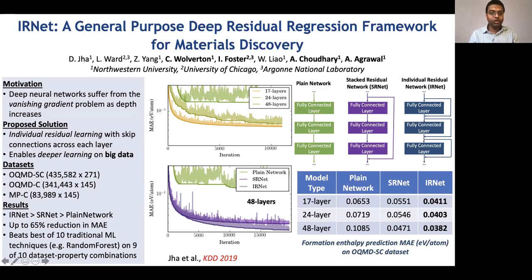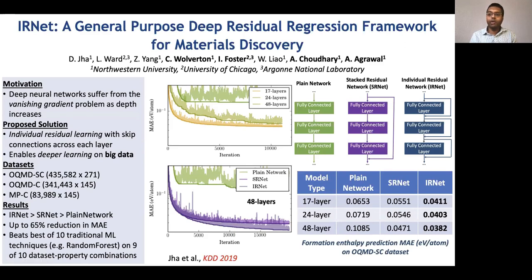One of our students, Dipendra Jha, came up with the idea of individual residual learning with skip connections — introducing skip connections after every layer of the fully connected network. That showed remarkable improvement in accuracy. This is a generic technique that can be applied to any scenario. Using data from OQMD and Materials Project, it demonstrated up to 65% reduction in error. The 48-layer network, which previously performed worst, became much more accurate using this concept.